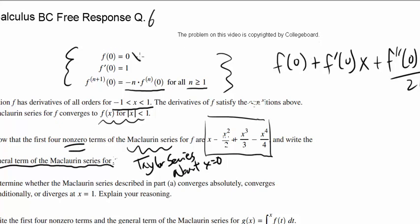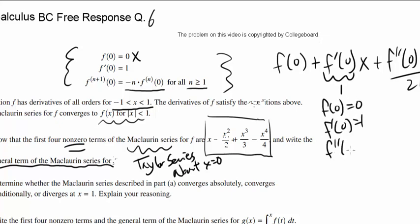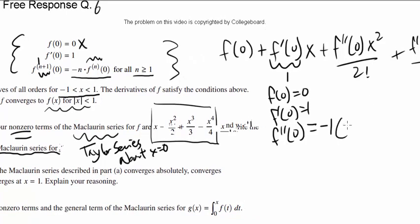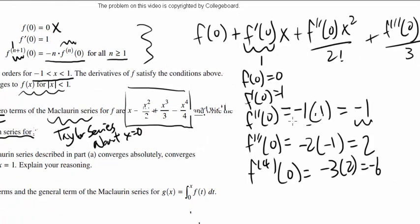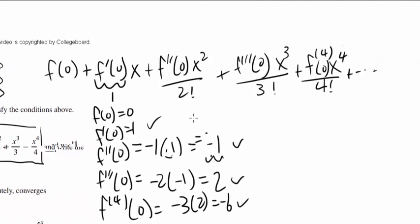Since f(0) = 0, that term is zero. f'(0) = 1, so that's our first non-zero term. For f''(0), we use the recurrence with n = 1: that gives negative 1 times f'(0) = negative 1. For f'''(0), it's negative 2 times f''(0) = negative 2 times negative 1 = 2. The fourth derivative at 0 is negative 3 times 2, which is negative 6. So we have our first four non-zero coefficients.